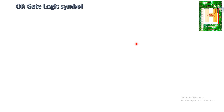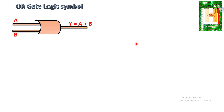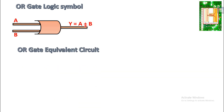Next is the OR gate. The symbol for the OR gate is as shown here, where A and B are the inputs and the output is Y equal to A plus B. We can say that the output is a summation of the inputs.